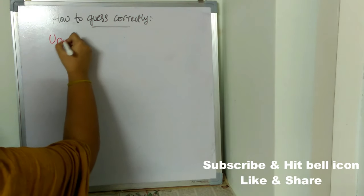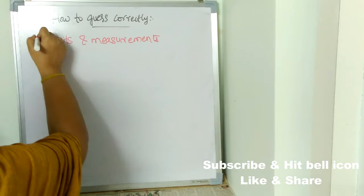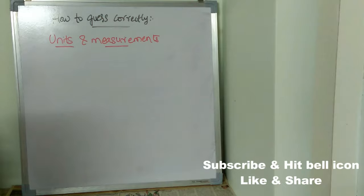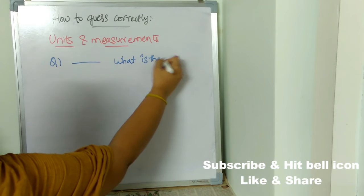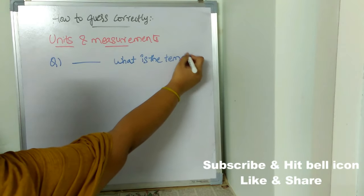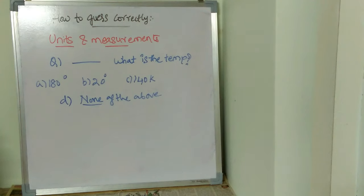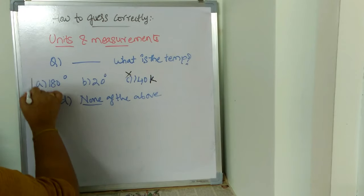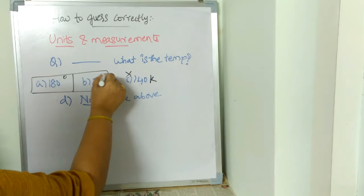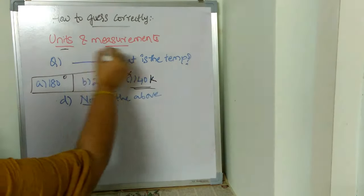Coming to units and measurements. For example, if a question asks 'what is the expected temperature?' and four options are given, you can eliminate options that don't use temperature units. Logically, you need to eliminate options with irrelevant units or measurements, leaving you with fewer options to choose from.